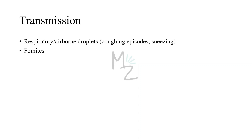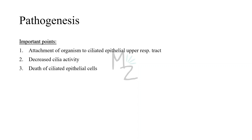Transmission: Bordetella Pertussis is transmitted by airborne droplets produced during severe coughing episodes or sneezing. It can also be transmitted by using fomites. Pathogenesis: Bordetella Pertussis attaches to the ciliated epithelium of the upper respiratory tract but does not invade the underlying tissue. There will be decreased cilia activity and subsequent death of ciliated epithelial cells.